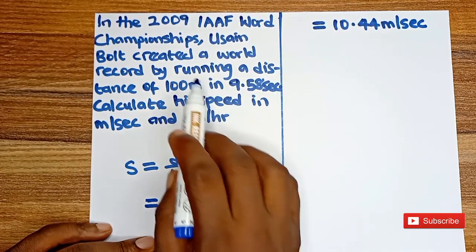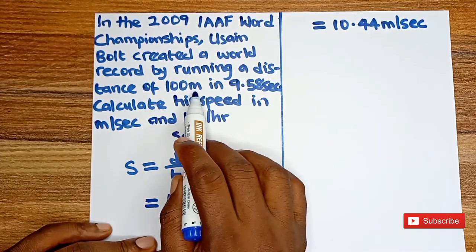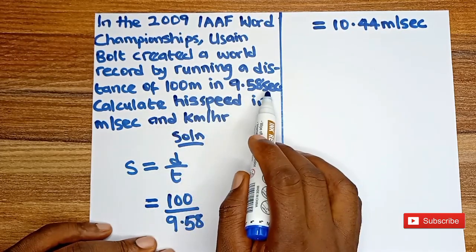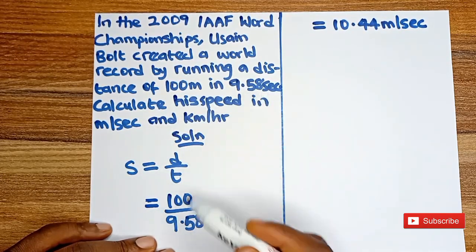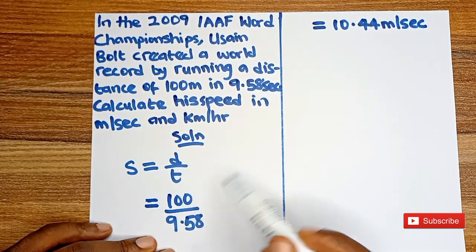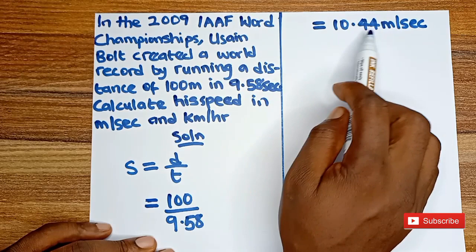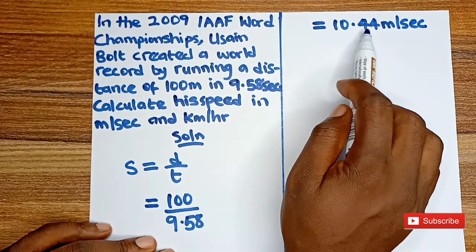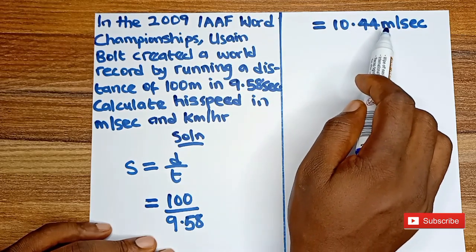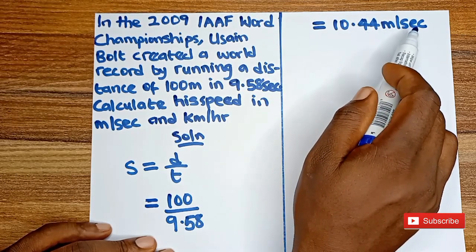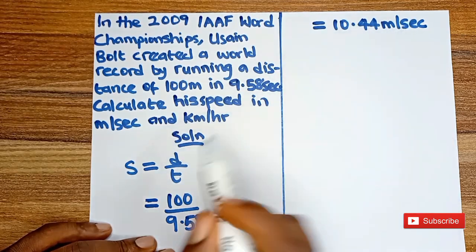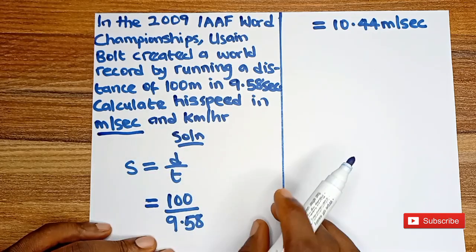Remember the distance is in meters and the time is in seconds, so when you divide them you are going to get 10.44 meters per second. This becomes the first answer.